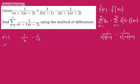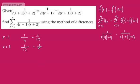Taking r=2: the first part gives 1 over 2×2×3 = 1 over 12, and we subtract 1 over 2×3×4 = 1 over 24. You can see the pattern building — the 1/12 terms will cancel when we sum.